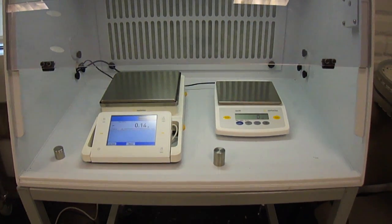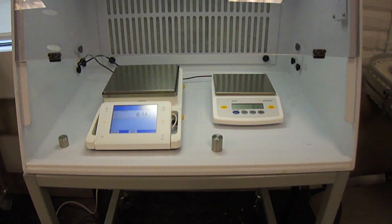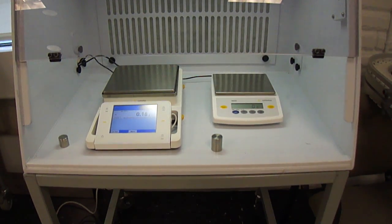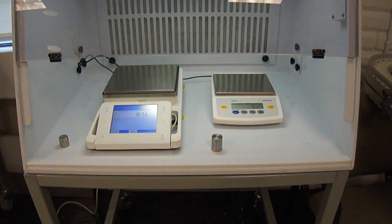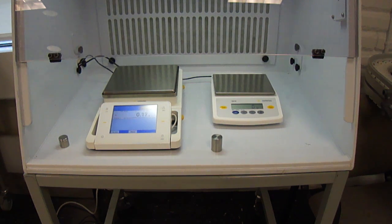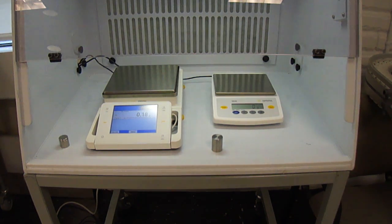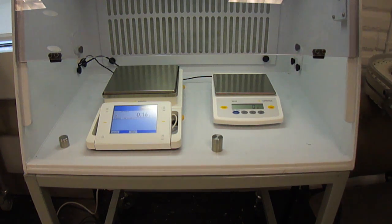Okay, so what I have here is the Sartorius SPH series hood with two balances. I have a TE6100 which is a 6100 gram by 1 gram, and I have a Cubis MSA6202P which is a 6200 by 0.01 gram and it's also poly range.